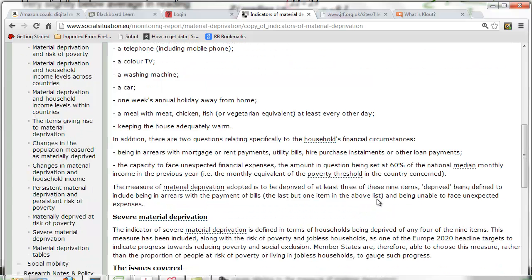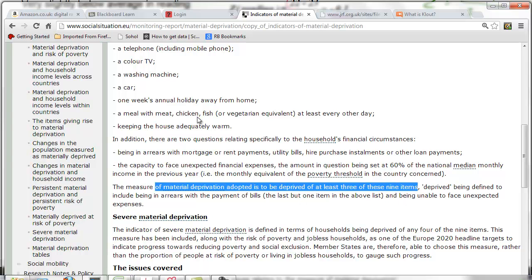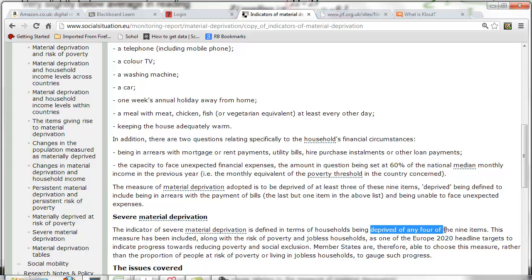Now, we are saying of a family being in material deprivation if a family is in trouble or doesn't have at least three of these nine items. This is different. We have nine variables, but the way how this is combined into one variable is to check whether a family is missing at least three of these. And severe material deprivation means at least four of these nine items the family doesn't have. There's a different way of combining these variables.